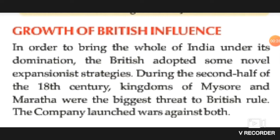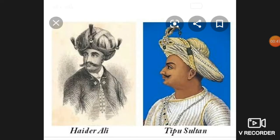In the second half of the 18th century, there were two biggest kingdoms in India that resisted British expansion. They were Mysore and the Marathas. The company launched war against both of them, first with Mysore. The territorial expansion of Mysore under Hyder Ali and later his son Tipu Sultan alarmed the company, as it was a threat to their political and economic policies.